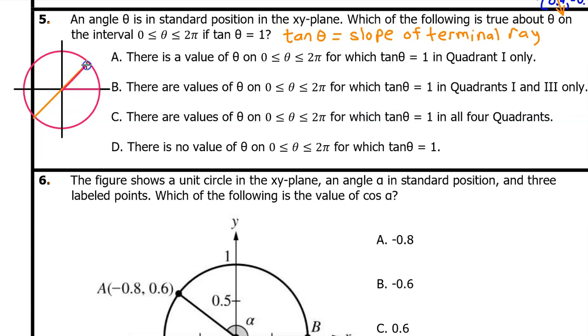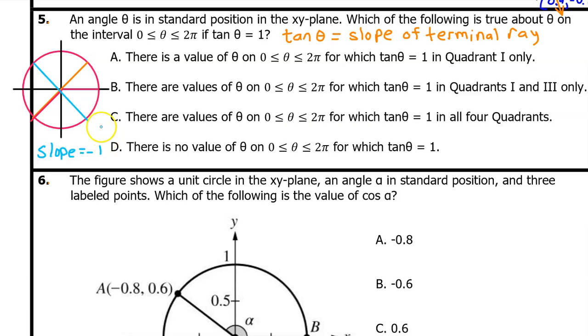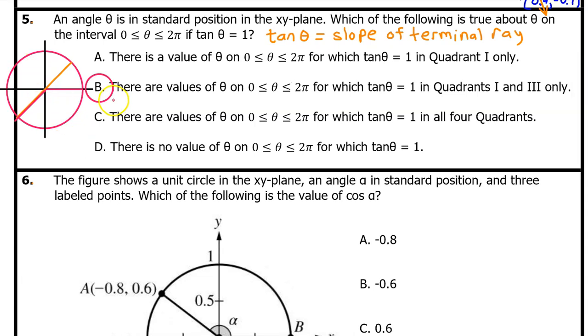That means the terminal ray could be in the first quadrant, like this, at π over 4, or it could be in the third quadrant, like this, at 5π over 4. Notice that the terminal ray could not be in the second quadrant or in the fourth quadrant, because the slope would be negative 1. The tangent of θ would be negative 1. So the answer is B, quadrants 1 and 3 only.